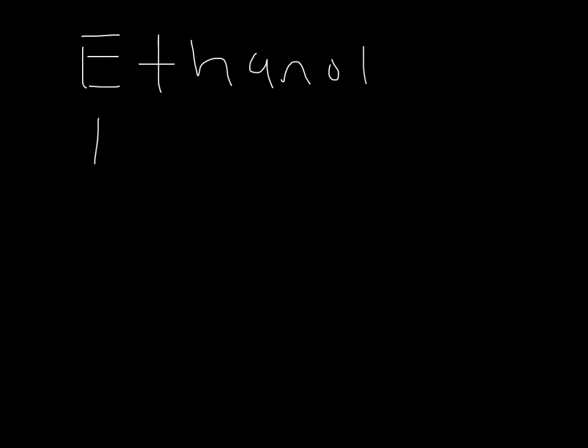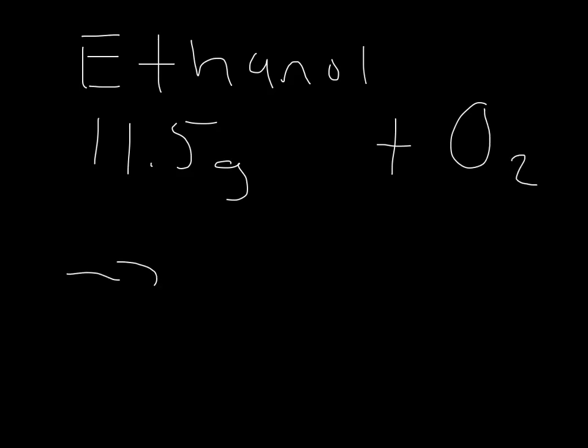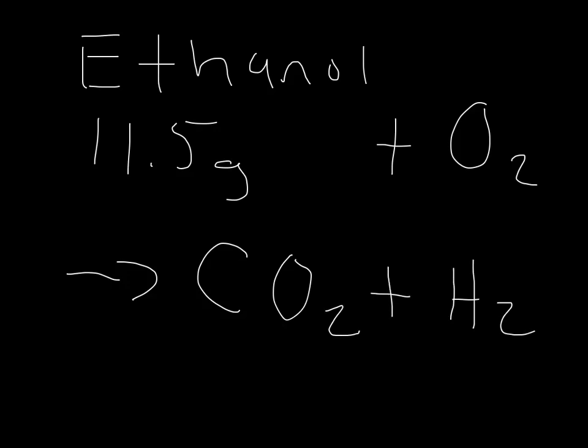We're going to start out with a sample size of 11.5 grams. We're going to take that 11.5 grams of ethanol and burn it — react it with oxygen — and it's going to form carbon dioxide in the gaseous form and water also in the gaseous form. We're going to do this in a special device which will capture the carbon dioxide and the water in separate absorbers, capturing what's produced from the ethanol reacting with the oxygen.